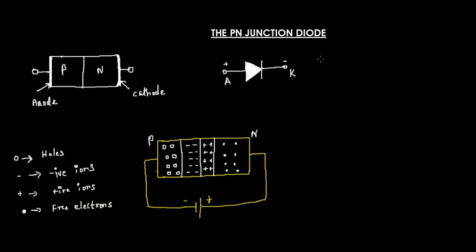In this lecture we are going to see the operation of a PN junction diode. This is the symbol and this is the representation of the PN junction diode. The PN junction diode has two modes of operation: reverse bias and forward bias. We are going to see the reverse bias operation in this lecture.